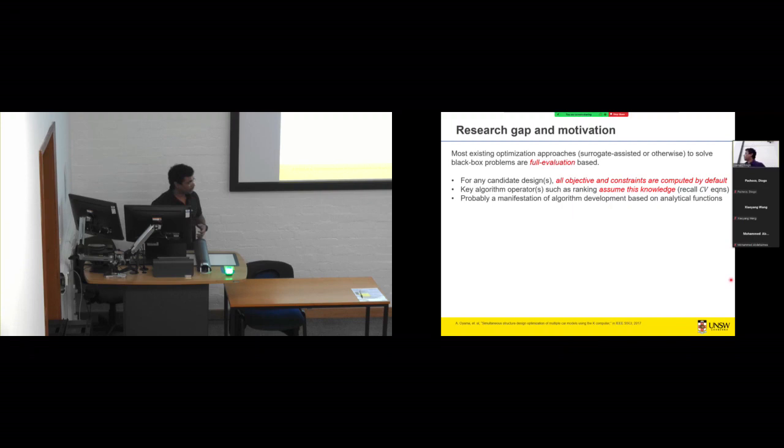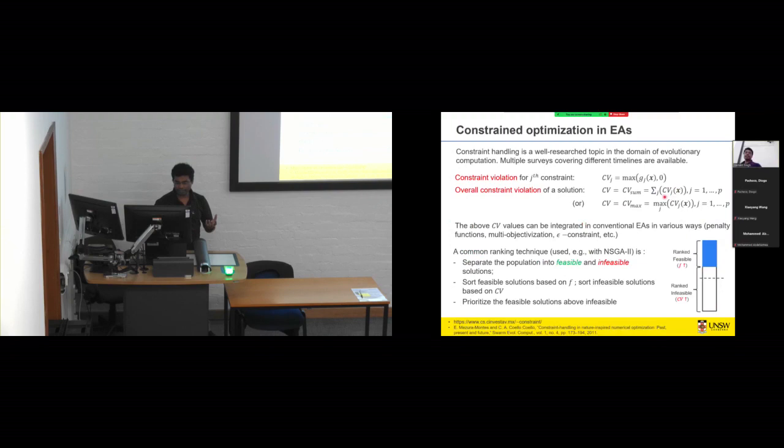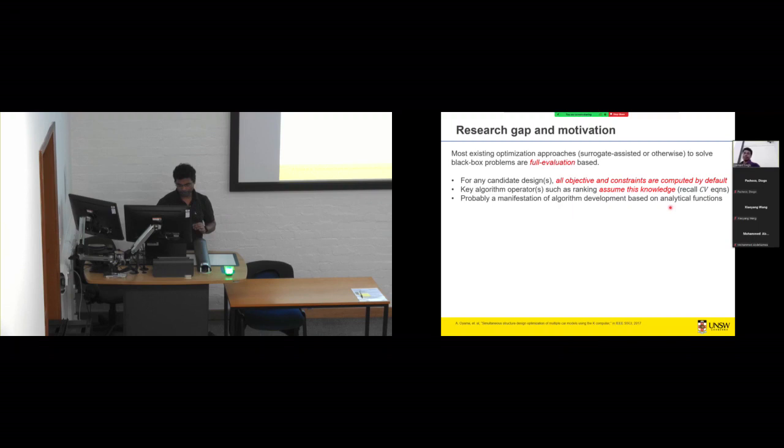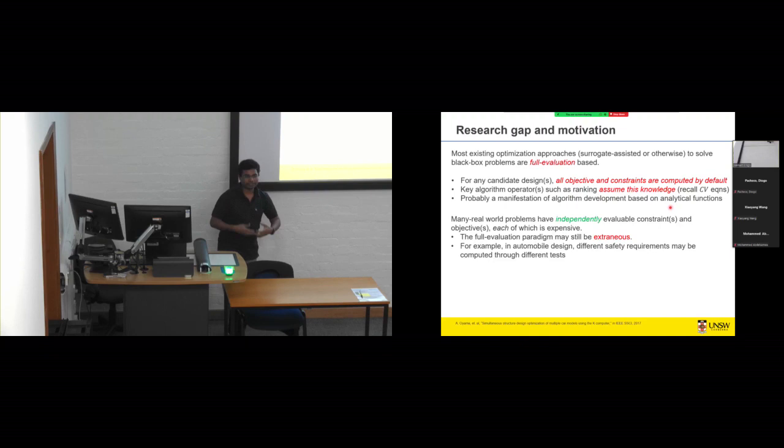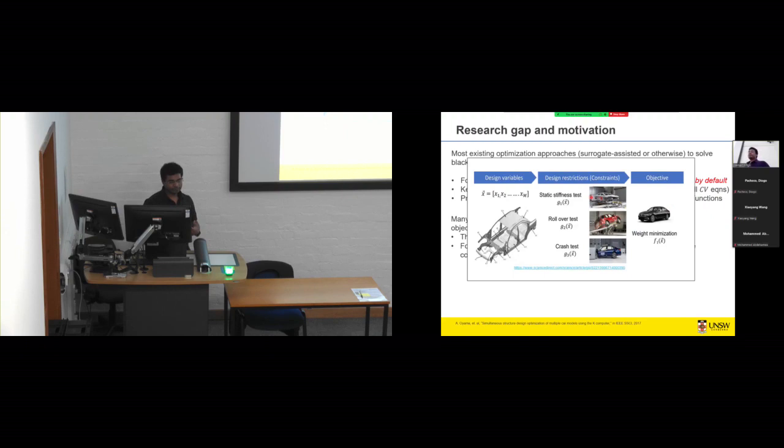So what we are trying to address in this particular work is that most of the existing approaches are so-called full evaluation based. Which means for any candidate design that is identified for evaluation, all objectives and constraints are evaluated by default. And actually the operators here assume this knowledge. So implicitly this assumption of full evaluation is used in most of the works that exist. But many real world problems involve independently evaluable constraints. Where you have multiple expensive constraints and you can evaluate them independently. So then it makes sense to consider whether you can only evaluate some of the constraints in order to save the cost involved in the others.